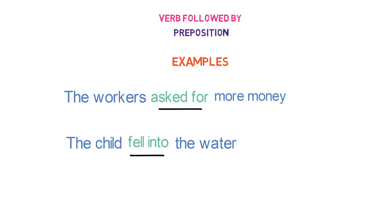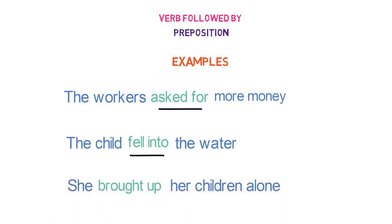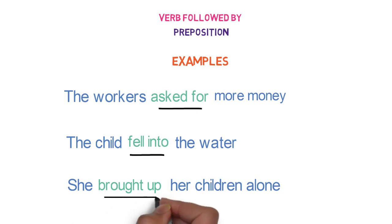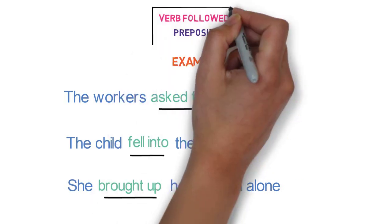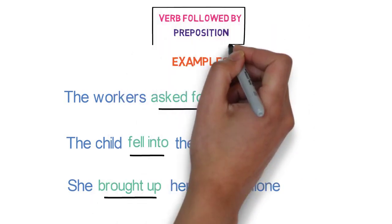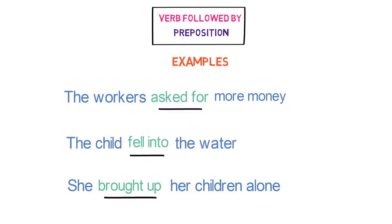Let's look into the last example of a phrasal verb containing a preposition. 'She brought up her children alone.' Here, 'brought' is the verb and 'up' is the preposition. And the whole group of words 'brought up' is a phrasal verb containing a preposition. All these are examples of phrasal verbs having a preposition.